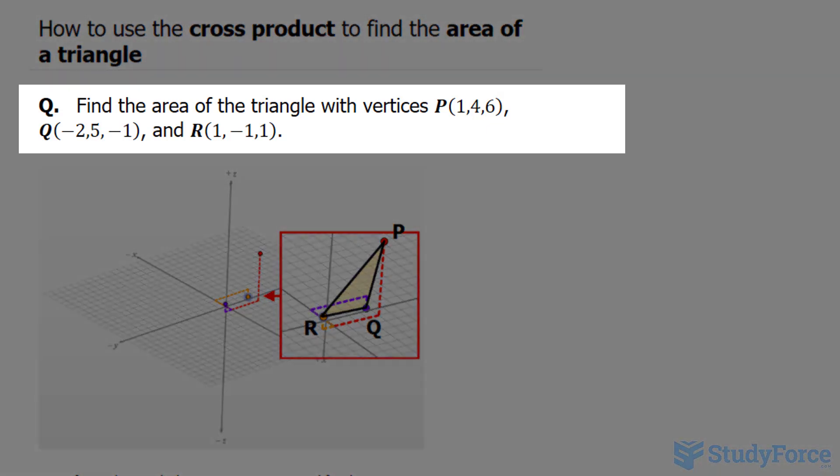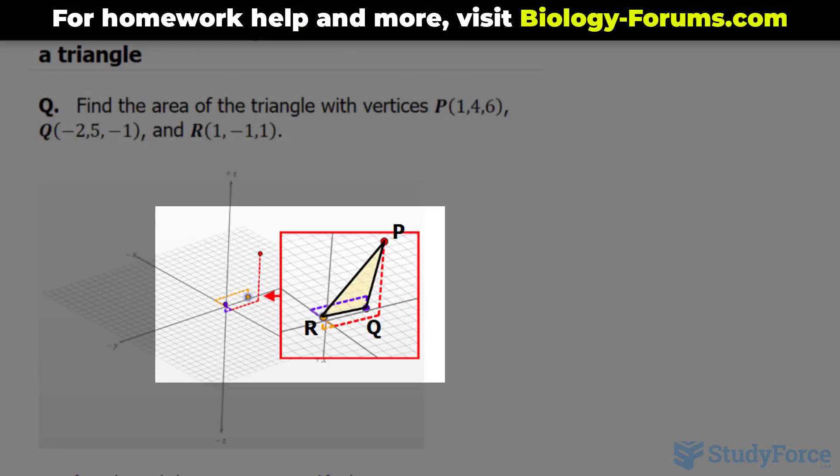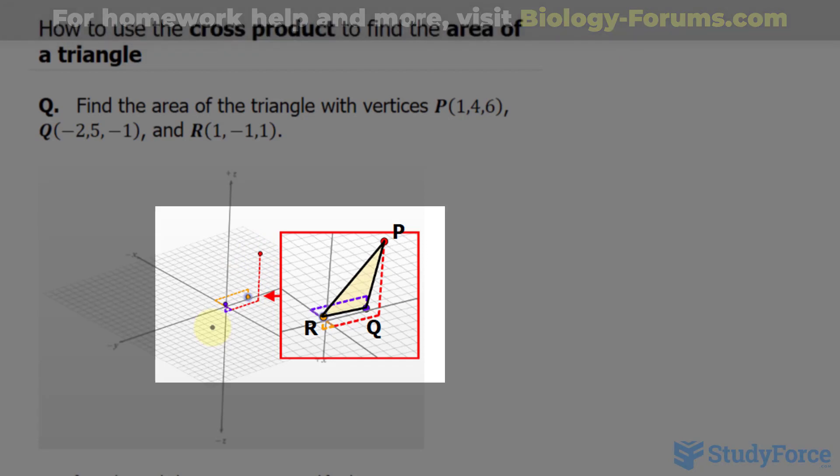The question reads, find the area of a triangle with the vertices P, Q, and R. And as you can see right underneath, I've plotted these points already and I've taken the courtesy to connect these points with lines.